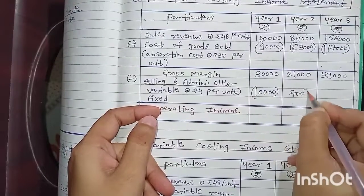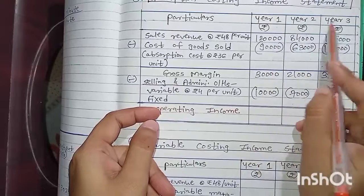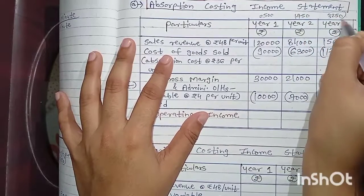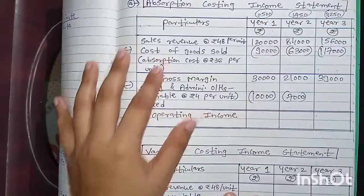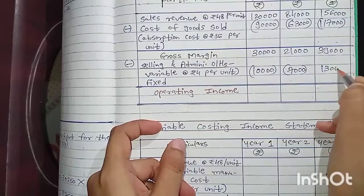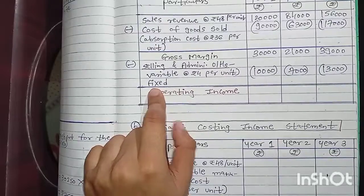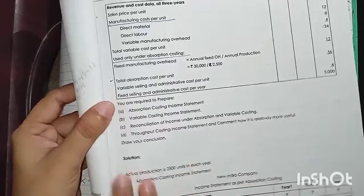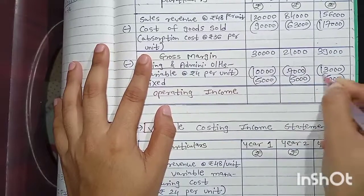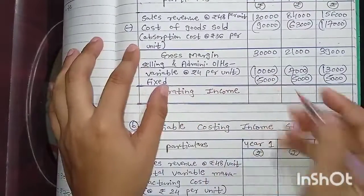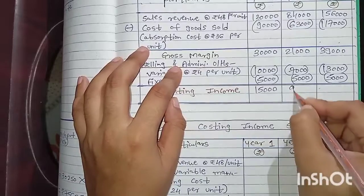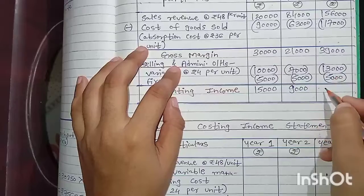Year 2 variable selling: 1,750 × ₹4 = ₹7,000. Year 3: 3,250 × ₹4 = ₹13,000. Fixed selling and administration cost is directly given as ₹5,000 for all three years. Final operating income: Year 1: ₹30,000 − ₹10,000 − ₹5,000 = ₹15,000; Year 2: ₹21,000 − ₹7,000 − ₹5,000 = ₹9,000; Year 3: ₹39,000 − ₹13,000 − ₹5,000 = ₹21,000. Absorption costing income statement is complete.